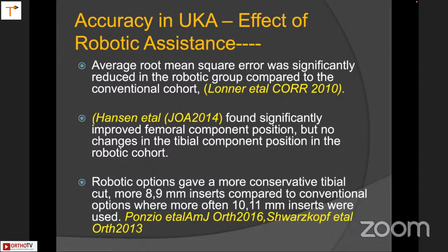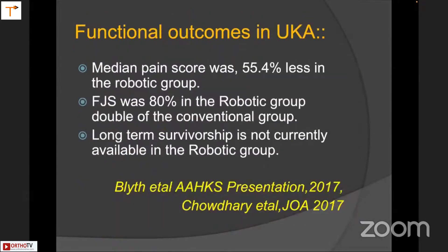But this brings us to the moot point: we're all talking about better alignment and better positioning — does improved alignment necessarily mean better outcomes? That's the question we need to ask. The incidence of smaller insert sizes — 9, 10, 11 — has increased since robotics came into its own. The argument that pain is less and forgotten joint score was double that of the conventional group is open to debate. For every article that supports this, there are articles that say quite the contrary. But we'll rest with the fact that it's a good, reproducible technique.